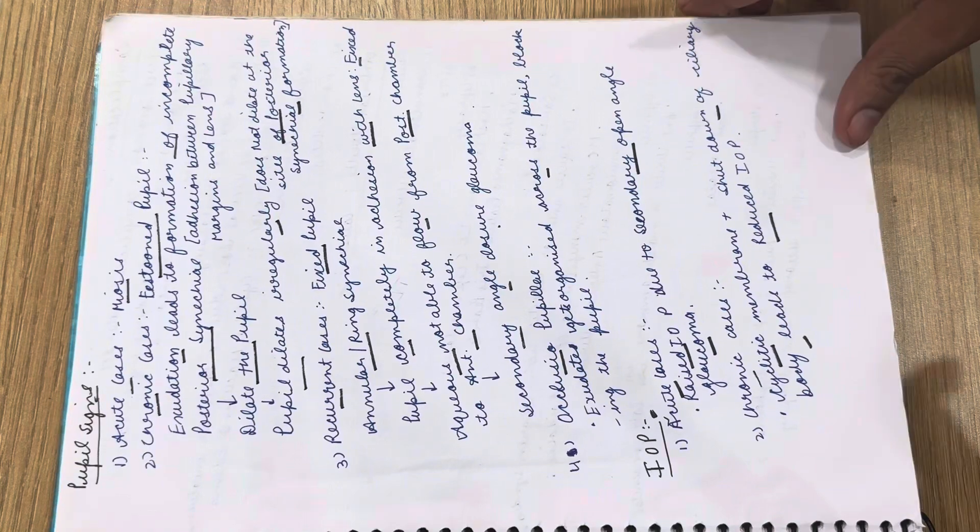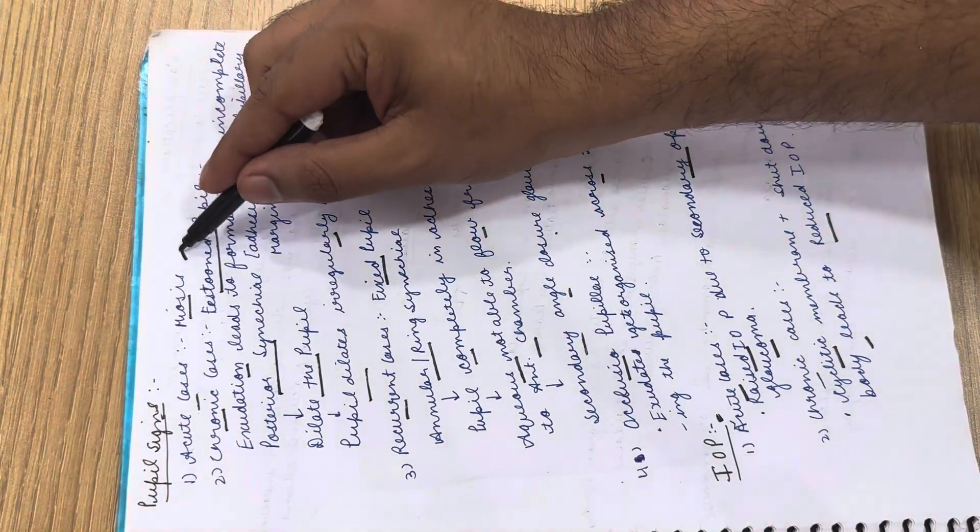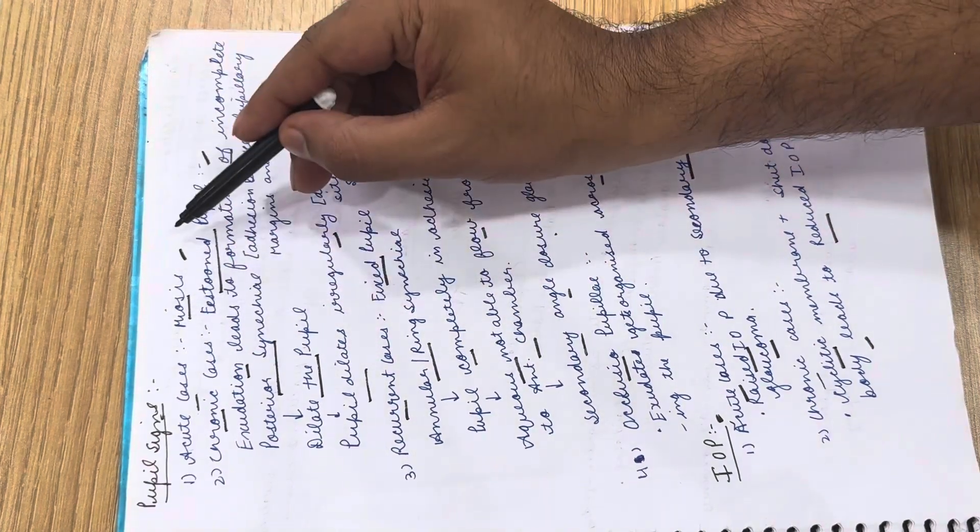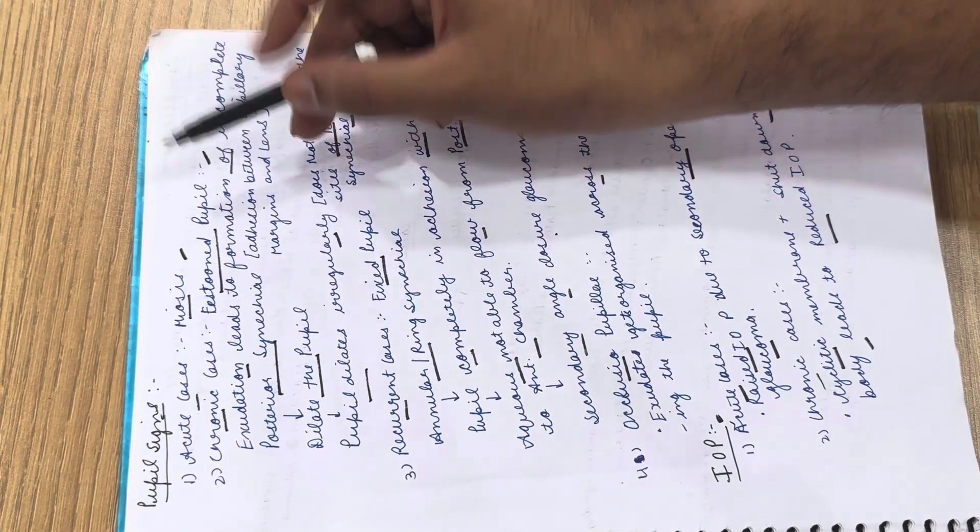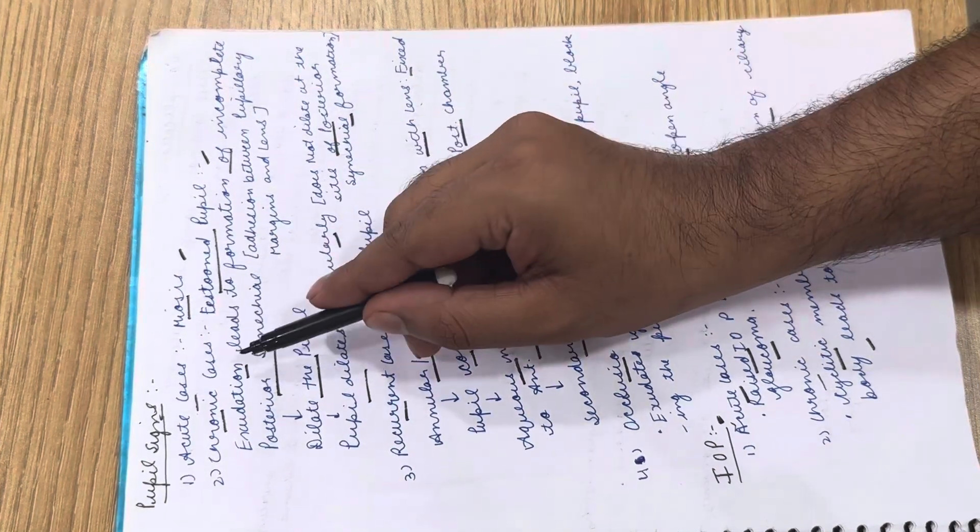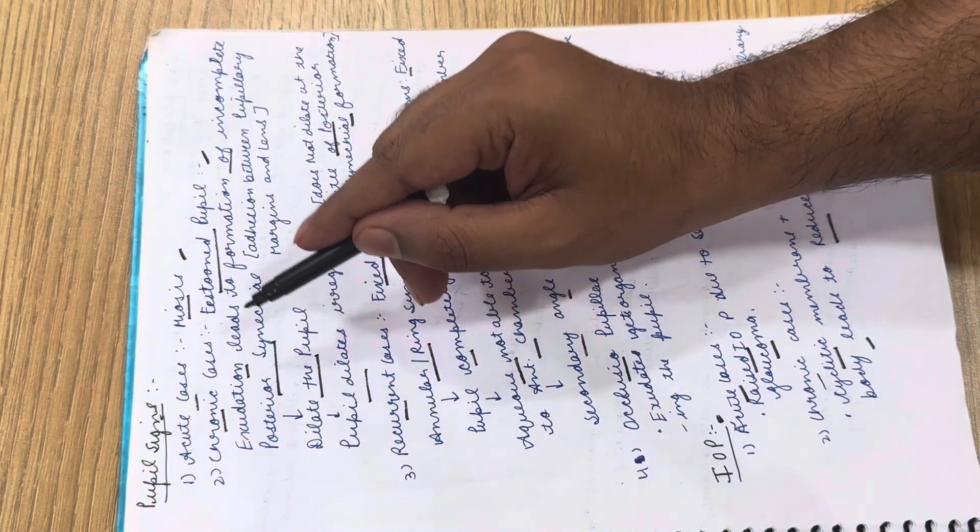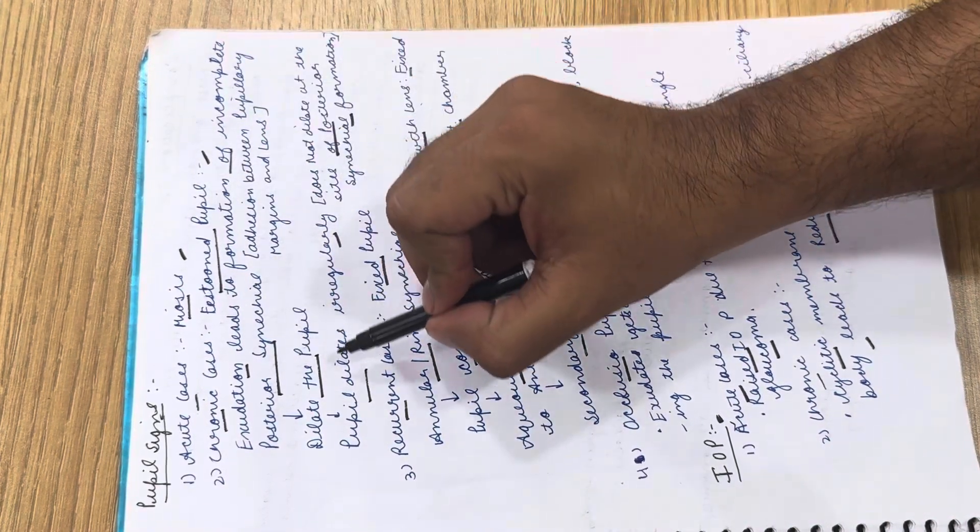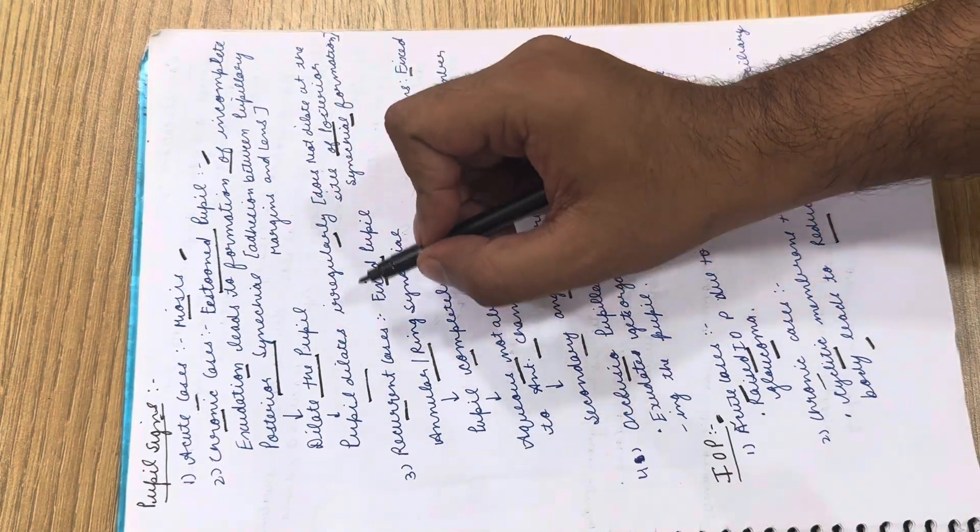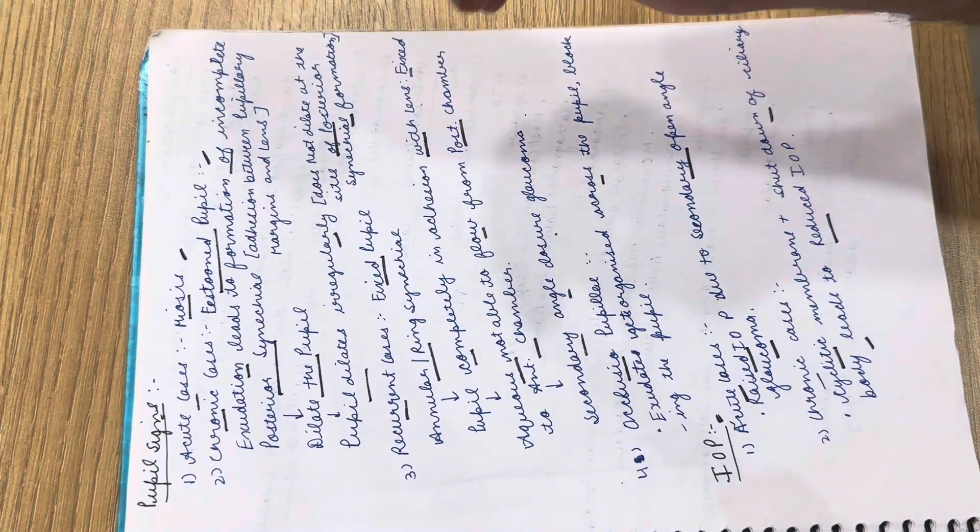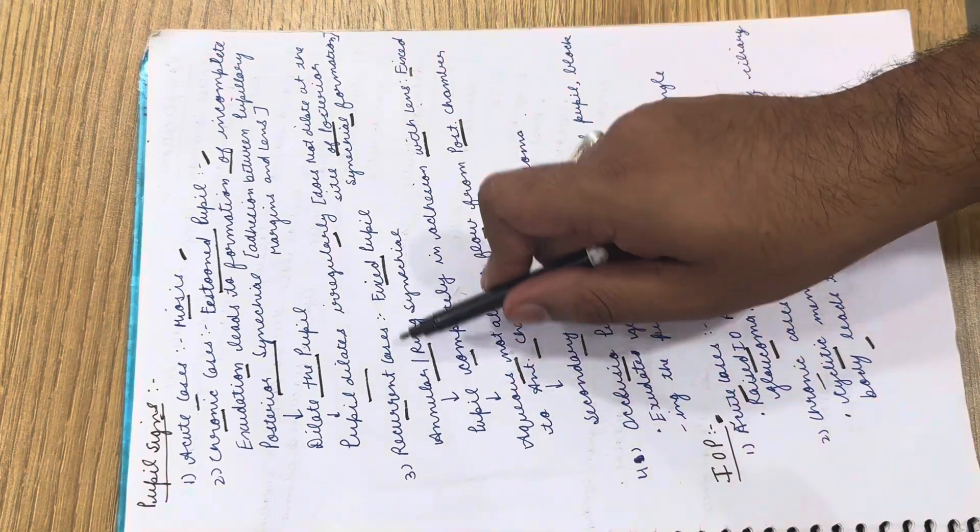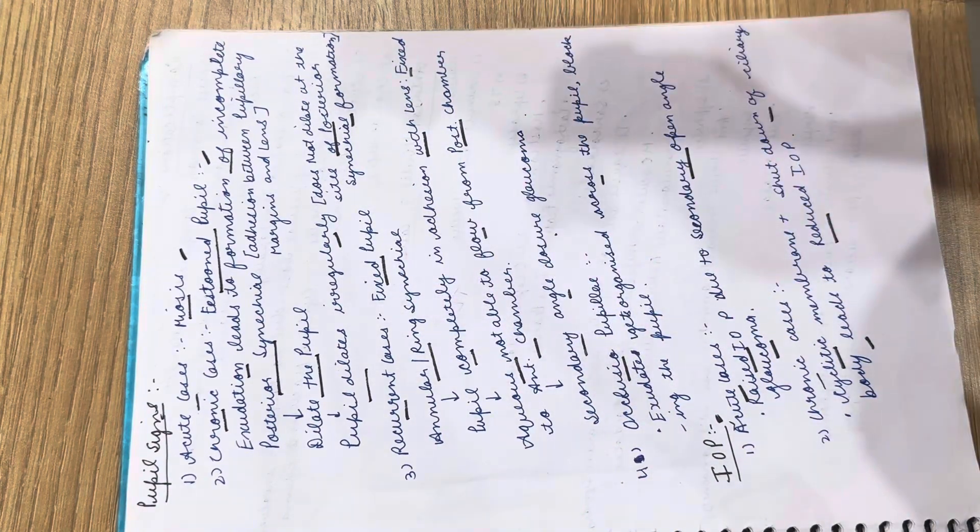The pupil signs: in acute cases we see miosis, in chronic cases we see festoon pupil. Why festoon pupil? Exudation leads to formation of incomplete posterior synechiae, causing irregular pupil dilation, hence the festoon pupil is seen—basically an irregular shaped pupil.